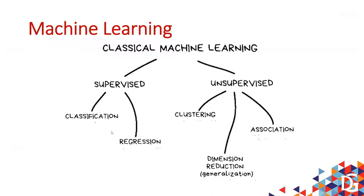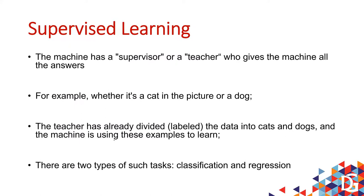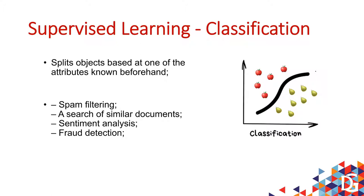On supervised learning, I have classification and regression — algorithms to work with both. Today I want to do a classification model. The idea of classification is to split objects based on one or more attributes. For example, spam filtering is a machine learning solution using a classification algorithm — this could be spam or could not be spam. It's what we call a discrete value: it is or it is not. This is the idea of classification, which I'll show you on the diabetes analysis — you could have diabetes or not.